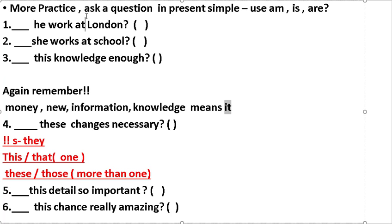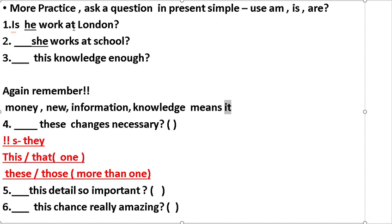More practice: ask a question in present simple using verb 'to be' — am/is/are. When we have subject 'he', 'she', or 'it' we use 'is': Is he working at London? Is she working at school?